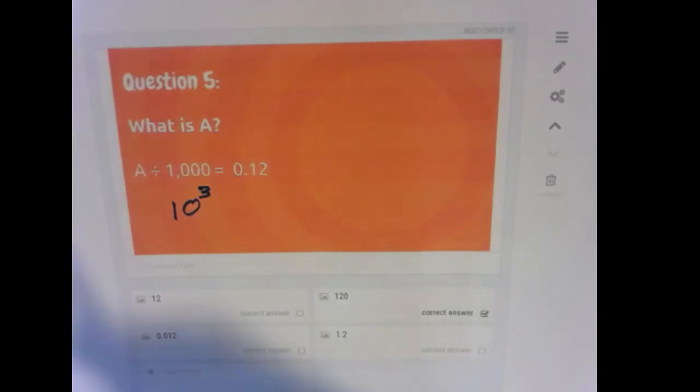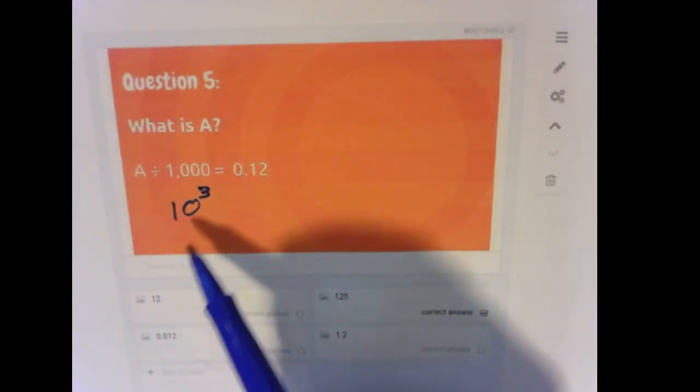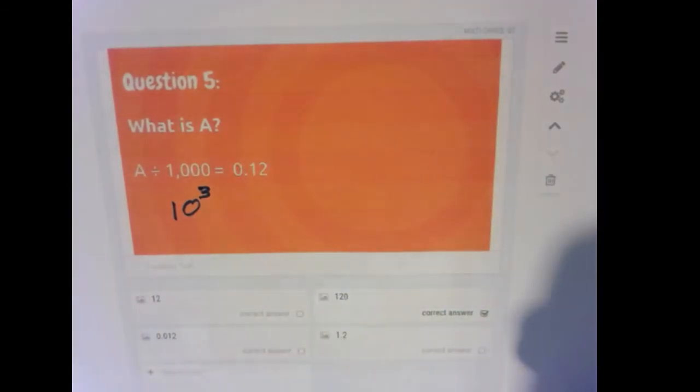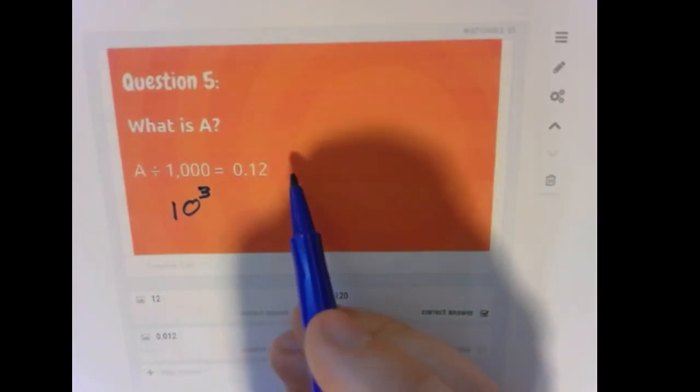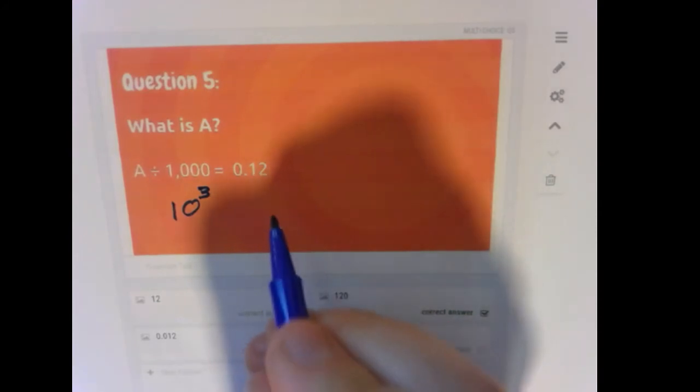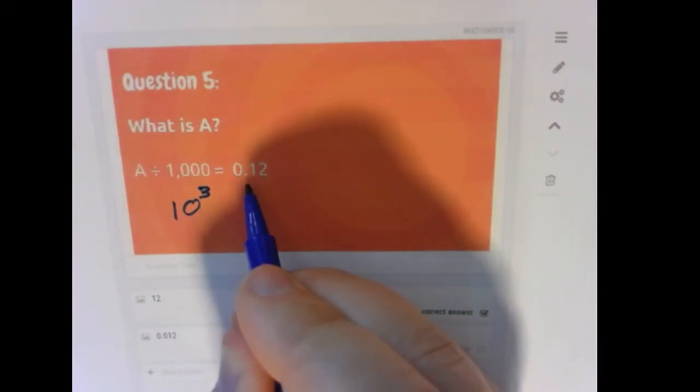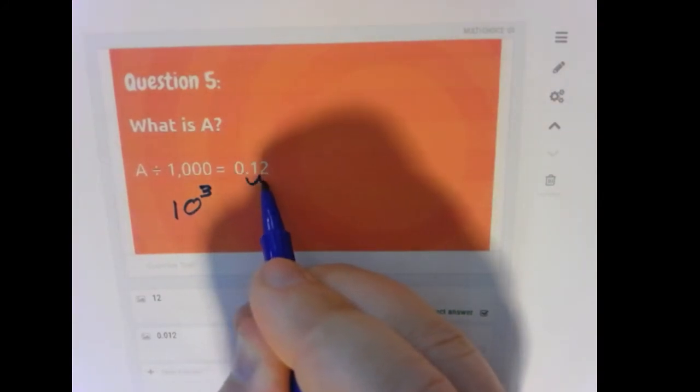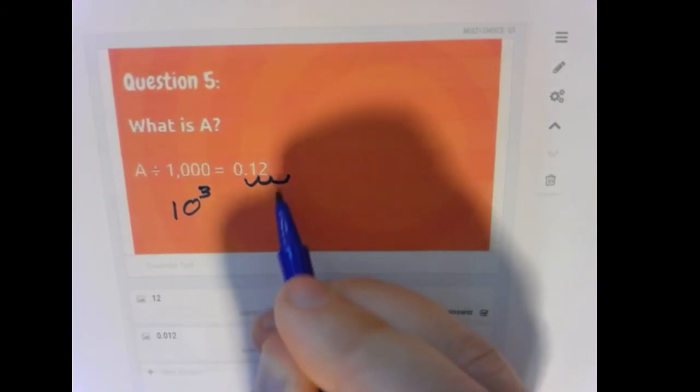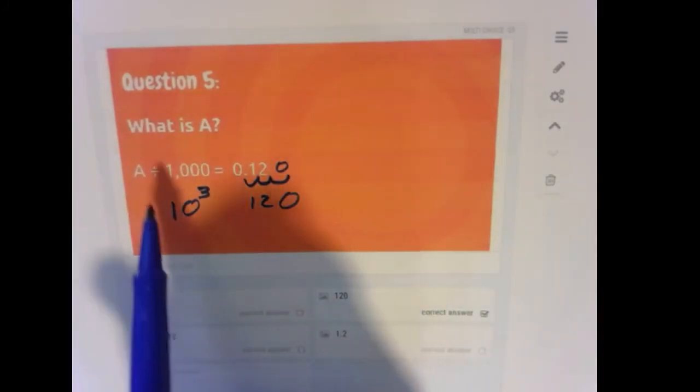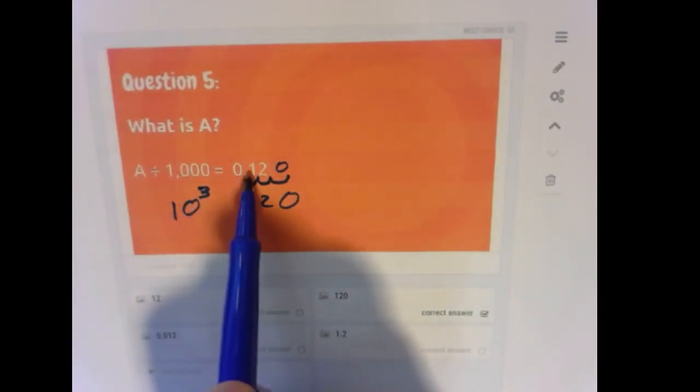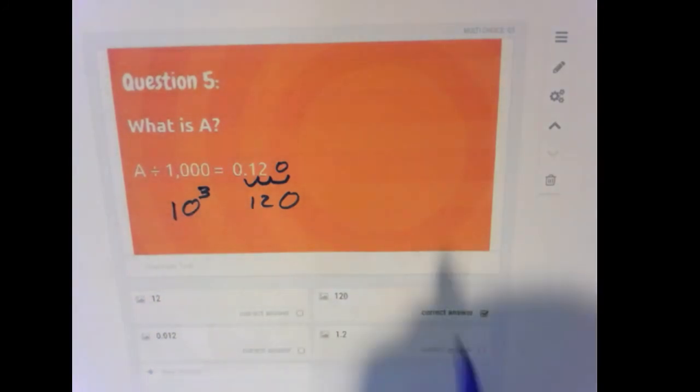So the power of the 10 is how many spots we're moving the decimal. Now, in this case, 0.12 was after we divided by 1,000. So we're actually going to instead of moving it to the left, move it to the right. One, two, three spots, and that would give us 120. So 120 divided by 1,000 gives us our 0.12.